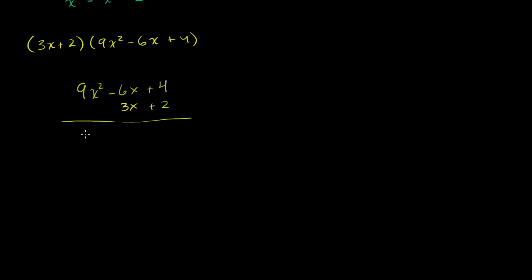You multiply almost exactly like traditional multiplication. Starting with 2: 2 times 4 is 8, in the constants place. 2 times negative 6x is negative 12x, in the x place. 2 times 9x squared is 18x squared, in the x squared place.